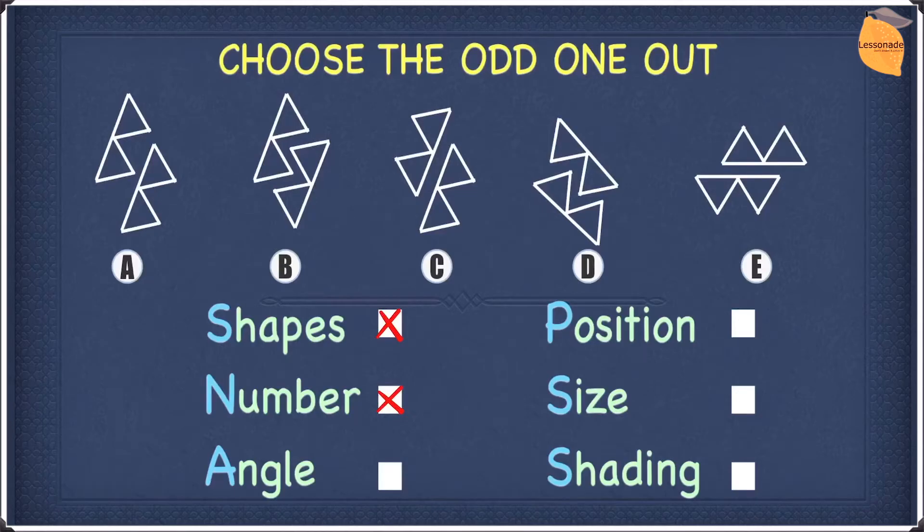In terms of angle, option A, both of the shapes point in the same direction. In option B, they point in the opposite direction. In option C, they point in the opposite direction. And in option D, they once again point in the opposite direction. And finally, in option E, they point in the opposite direction. This means our odd one out for this example is going to be A.